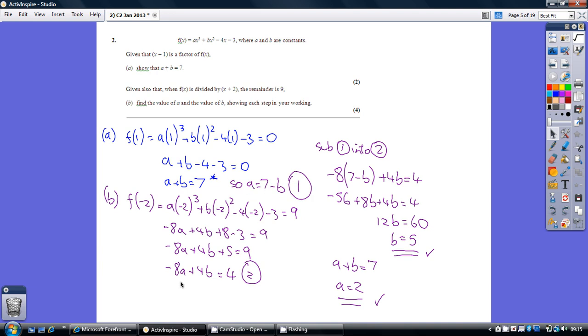We substitute this into our equation two, so we replace the a with seven minus b. Which we've done over here - we've now got an equation with just one variable in it, b, so we can solve this.